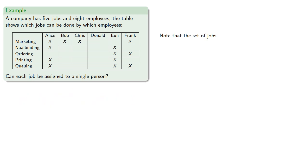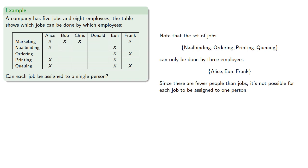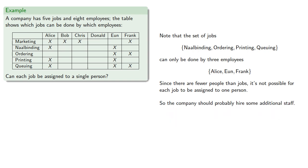Now if we look closely at the jobs, we note that this job Nailbinding, Ordering, Printing, and Queuing can only be done by three employees. Since there are fewer people than jobs, it's not possible for each job to be assigned to one person, and said the company should probably hire some additional staff.